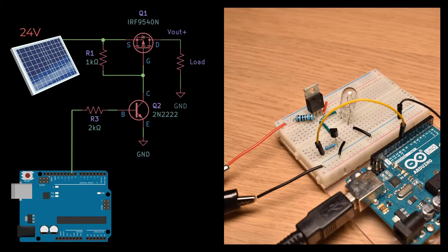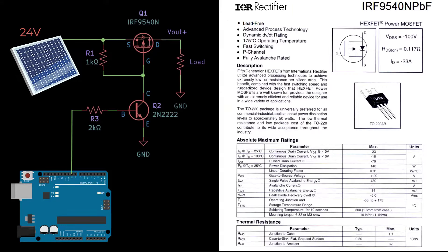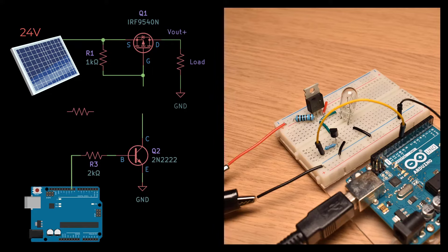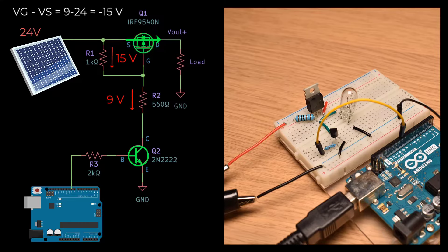There's one final issue we need to iron out. The maximum gate source voltage of the 9540N is negative 20 volts. So, with the panel providing 24 volts, I'll be over the MOSFET's rating. Not good. To fix this, I can add another resistor to divide the voltage. A 560 ohm resistor will drop about 9 volts, leaving a maximum gate source voltage of negative 15 volts, well within the rated limit of negative 20 volts.